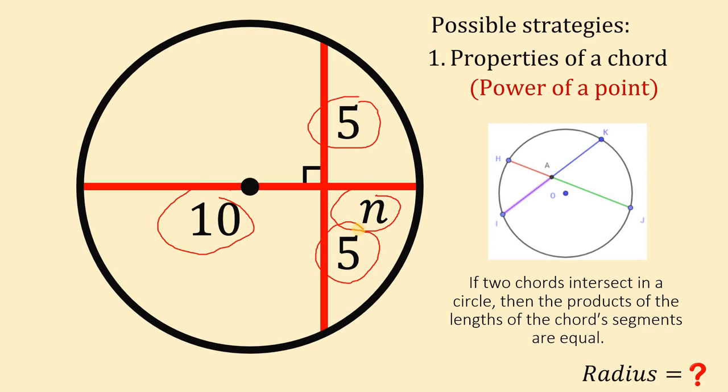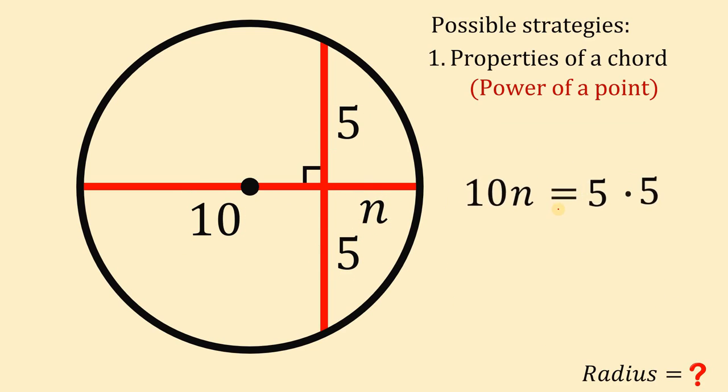So we have now an equation in terms of N. We have 10N equals 5 times 5. Now 5 times 5 will give us 25. To solve for the value of N, let's divide both sides by 10. So N is equal to 25 over 10, which is 2.5. So the value of this length is 2.5.